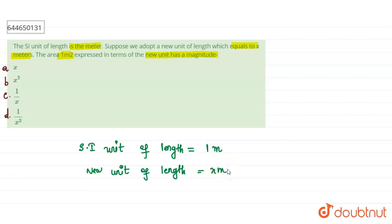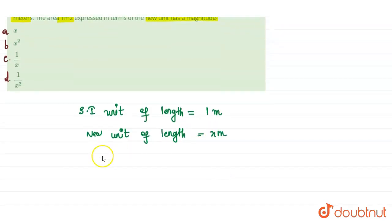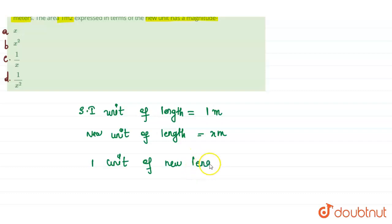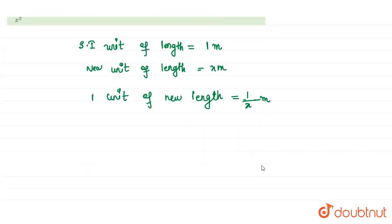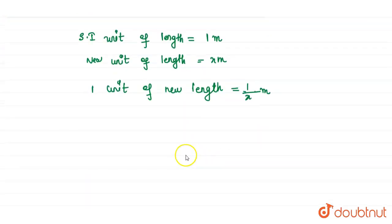Then, what is one unit of new length? One unit of new length is equal to 1 by x meters. So, what is the unit of area given in the old system? In the SI system, the unit of area is given as 1 meter square.